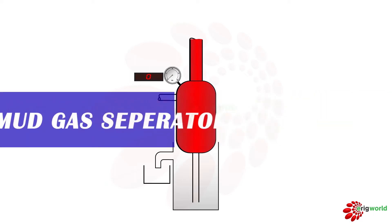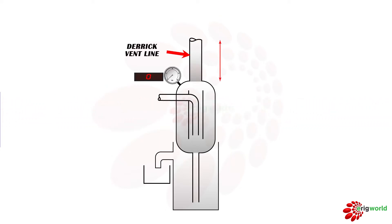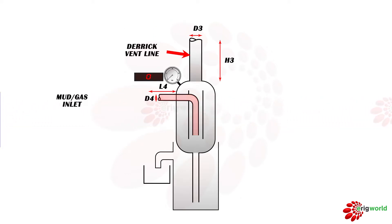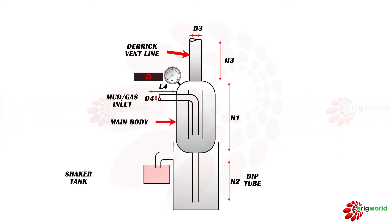This is a mud gas separator. This is called the vent line, which is used to vent out the gas separated from the mud. The height of the vent line is called H3 and the internal diameter of the vent line is D3. This point is connected to the mud inlet and this is connected to the choke, so whatever fluid comes out of the choke will come into the system. This is the main body and the deep tube height is called H2. The output or discharge of the mud gas separator is connected to the shaker.